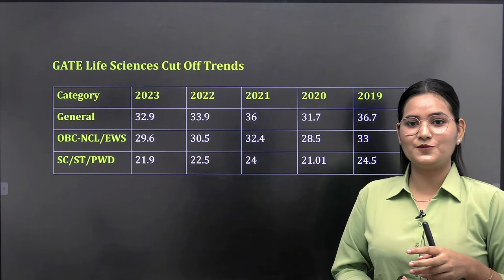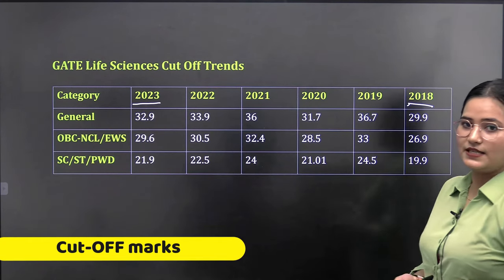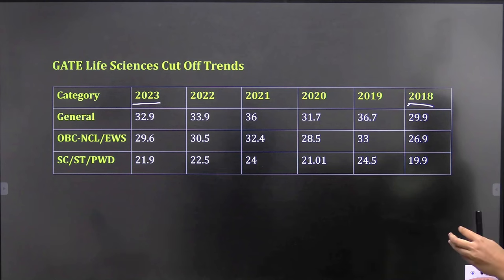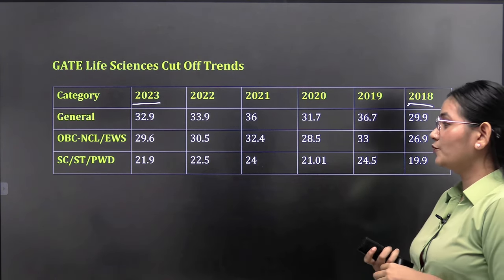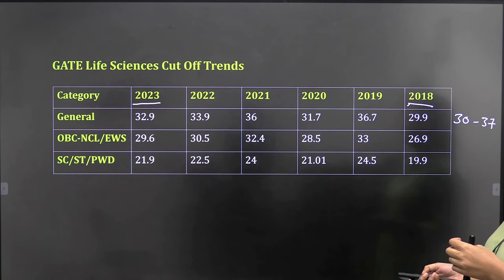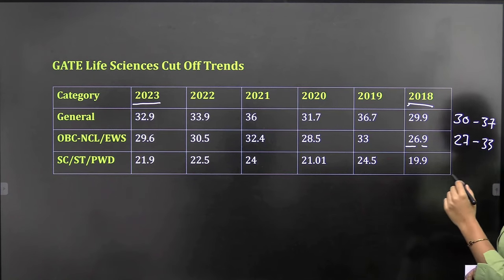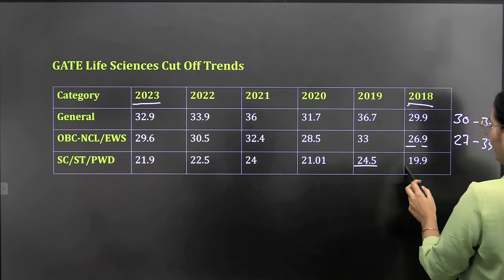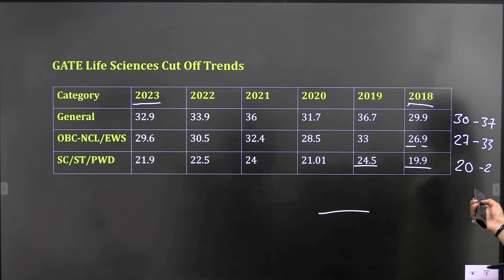In this slide I have mentioned the gate life science cut-off. Here I have shown you total six years of cut-off from 2018 to 2023. If you look at the general category, the cut-off range is 32.9, 33.9, 36, 31.7, 36.7, and 29.9, which ranges from 28 to 36. For OBC non-creamy layer, the range is approximately 25 to 30. For SC category, it's 20 to 25, and for ST category it's approximately 18 to 22. This is basically the range of cut-off for six years.